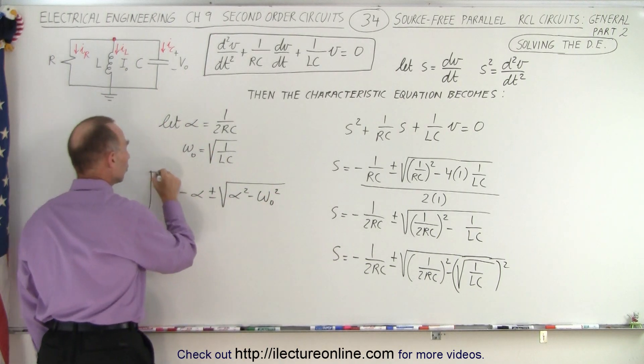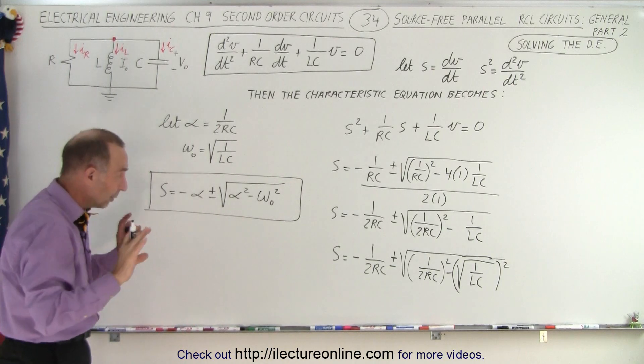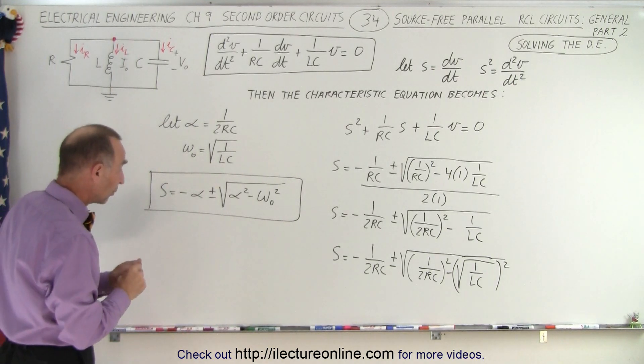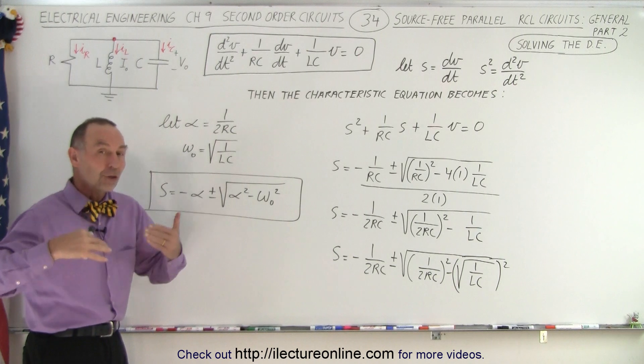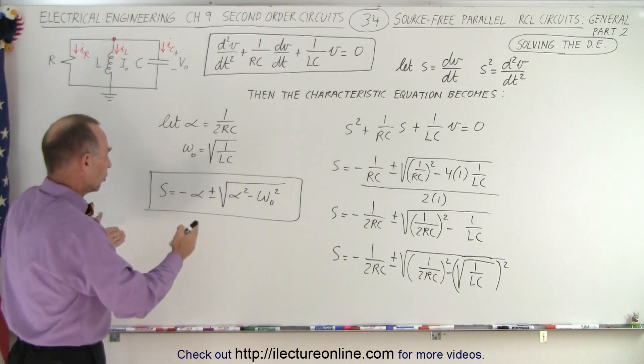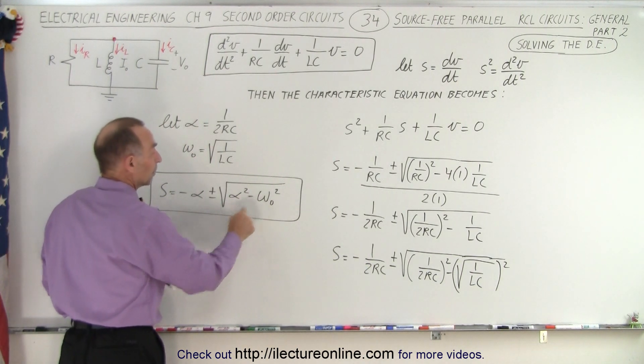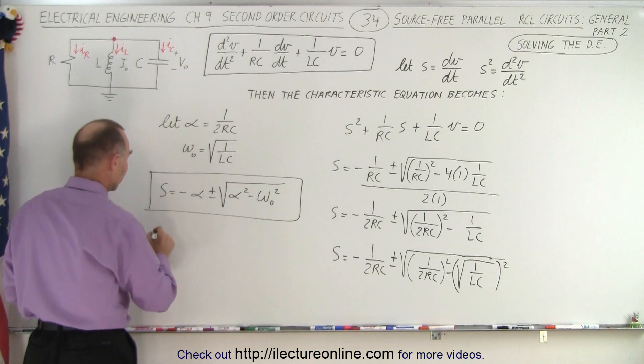And this now becomes the solution to our differential equation. I say, wait a minute, what can we do with that? We'll show that on the next video, because we're going to develop the three possible solutions of this. Now we say, why are there three possible solutions? Well, we have the square root of alpha squared minus omega squared, so we're going to end up with three cases.